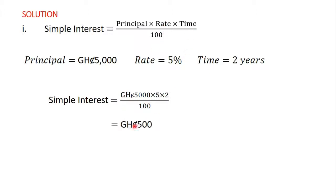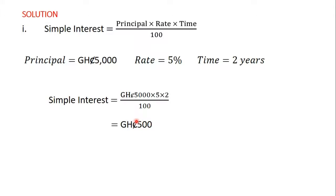This will give us five hundred Ghana cedis. This means that the simple interest earned at the end of the two years was five hundred Ghana cedis.